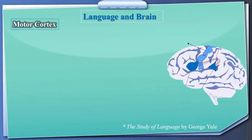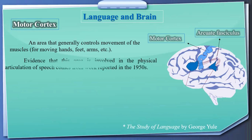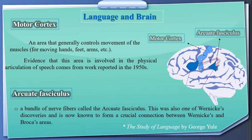This finding confirmed the left hemisphere location of language ability and led to the view that Wernicke's area is crucially involved in understanding speech. The motor cortex is an area that generally controls movement of muscles for moving hands, feet, and arms, and evidence from the 1950s shows it is also involved in the physical articulation of speech. The arcuate fasciculus is a bundle of nerve fibers now known to form a crucial connection between Wernicke's area and Broca's area.